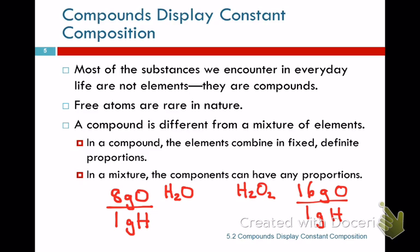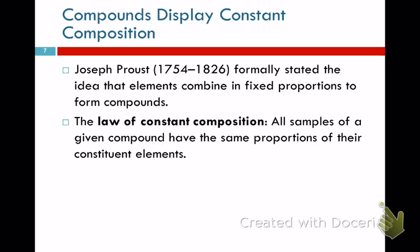Proust — turn of the 17th/18th centuries — was the one who figured out that elements always combine in fixed proportions. He made the Law of Constant Composition: all samples of a given compound have the same proportion of their constituent elements. The ratios are always the same. For water, it's always 8 to 1. 18 grams of water is made of 2 grams of hydrogen and 16 grams of oxygen — true of any pure sample of water, no matter where you get it.